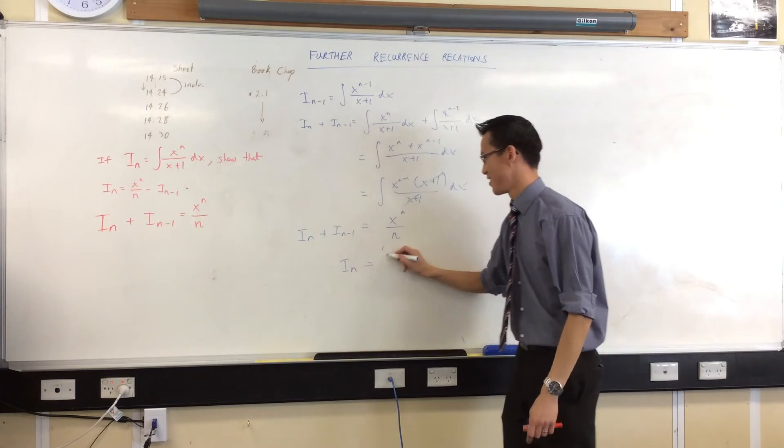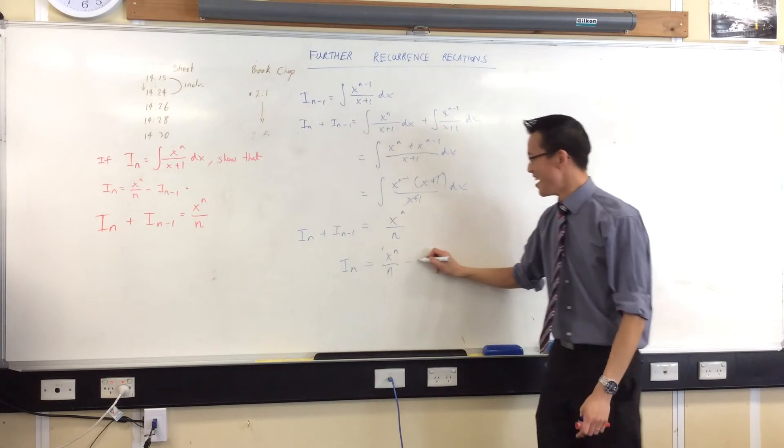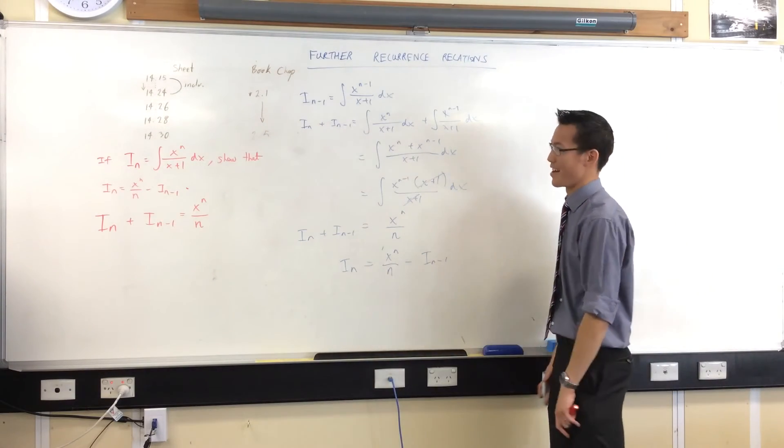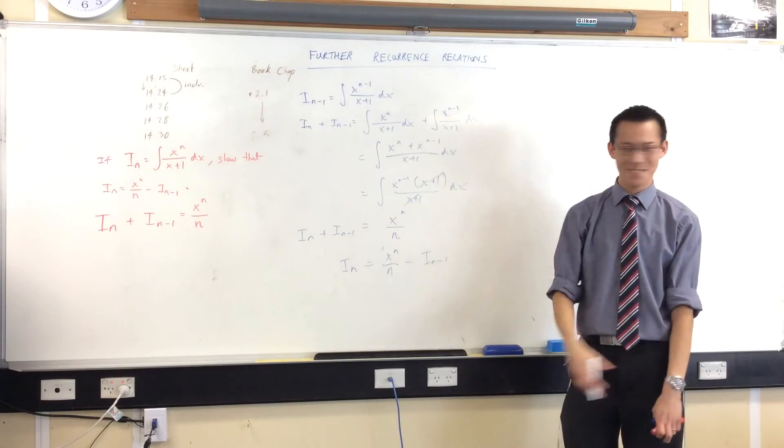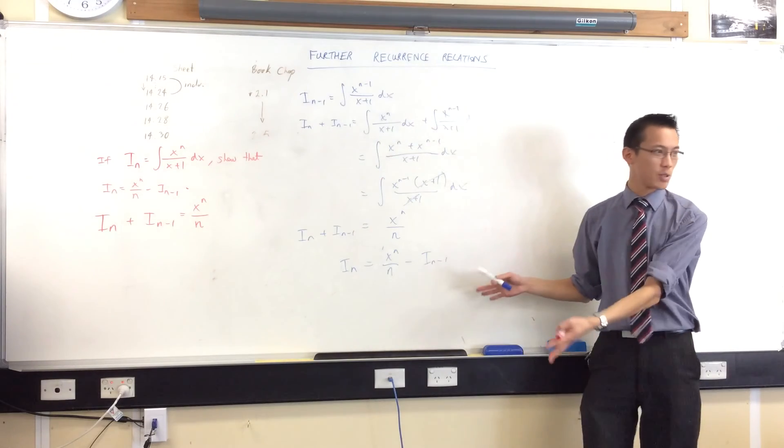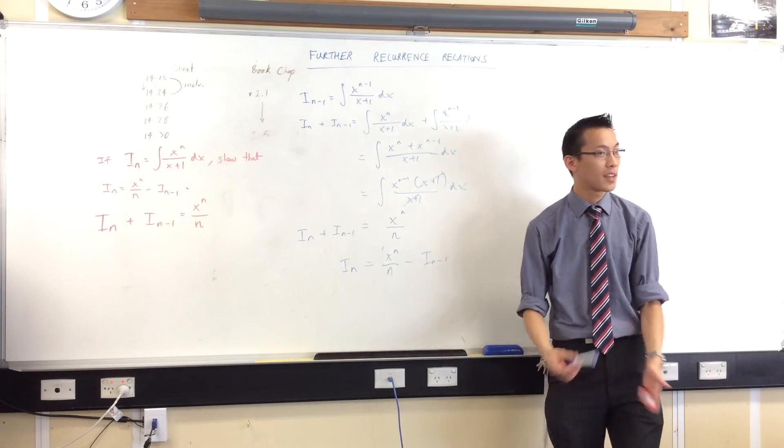So yeah, take that minus that. And there's your recurrence relation. No integration by parts, no trig identities, no nothing. You just rearrange things a little bit. But because it fits what a recurrence relation is, it's fair game.